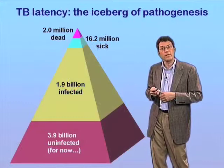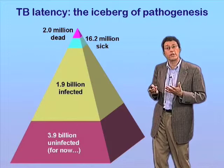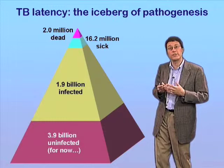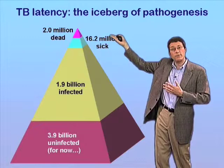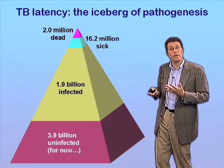Two million deaths a year attributed to tuberculosis is obviously a large number, but it's really only the tip of the iceberg — what I like to call the iceberg of pathogenesis — in terms of its impact on global human health, which is illustrated in this pyramid diagram here. It's a bit like an iceberg: we tend to focus on the bit that shows above the waterline, the tip of the iceberg, but it truly is only part of the problem.